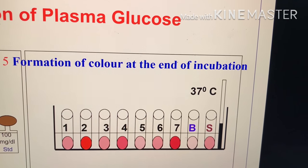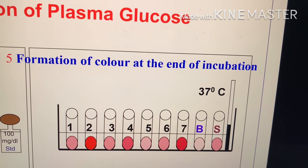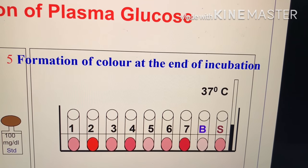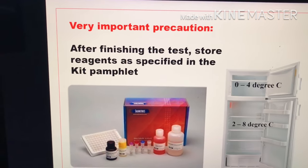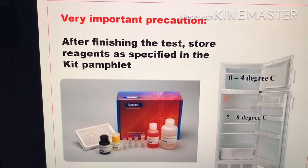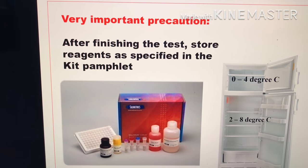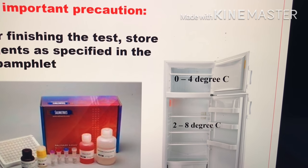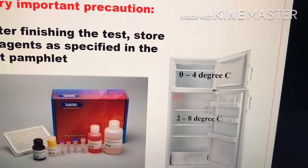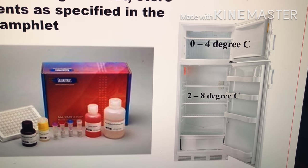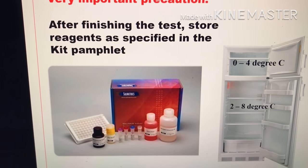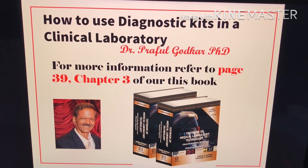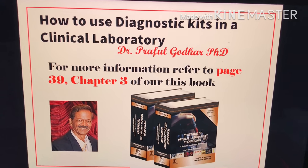At the end of the incubation time, you will get various colors formed in the various tubes. Then you have to take readings on the photometer or semi-auto analyzer. A very important precaution: after finishing the test, store reagents as specified in the kit pamphlet — that means some reagents at 0 to 4 degrees centigrade in the refrigerator, some at 2 to 8 degrees centigrade, and some at ambient temperature. For more information, refer to page 39 of chapter 3 of this book.